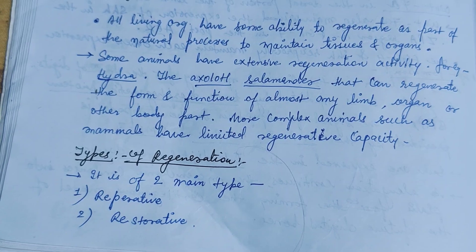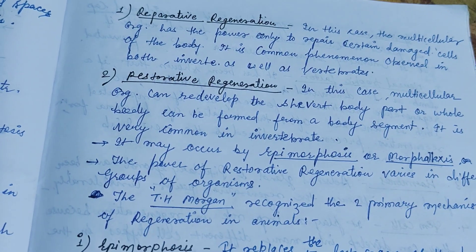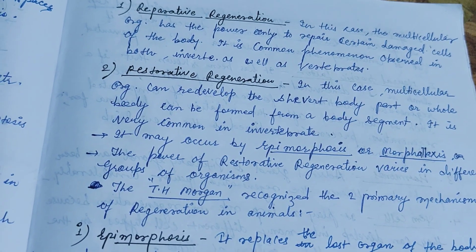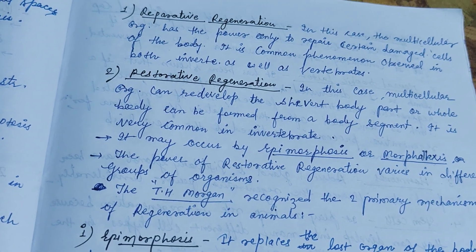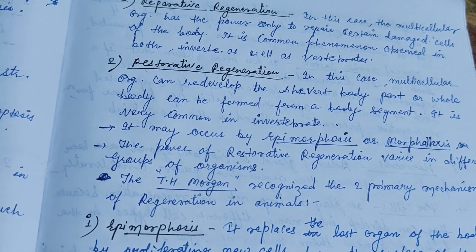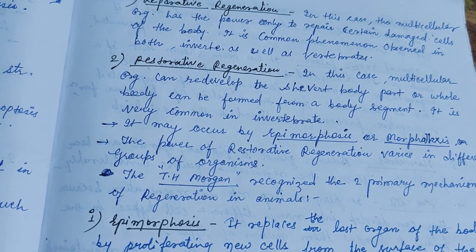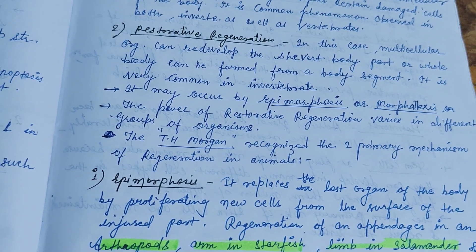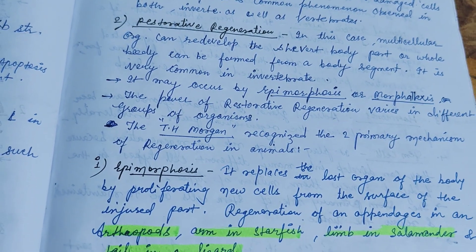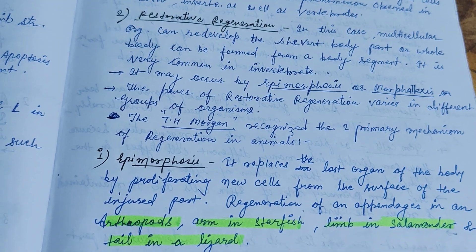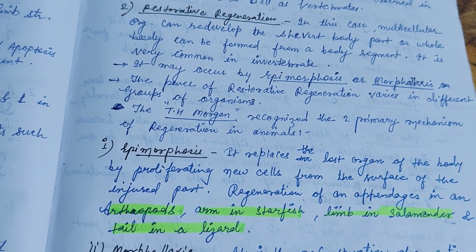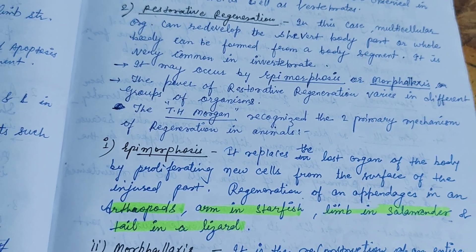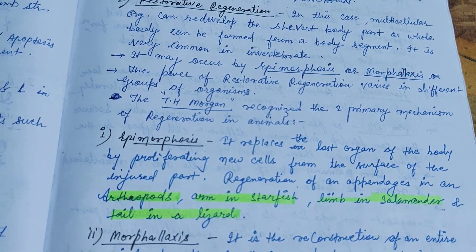Repetitive regeneration is when a multicellular organism has the power to only repair certain damaged cells of the body. It is a common phenomenon observed in both invertebrates as well as vertebrates. The second type is restorative regeneration, in which the multicellular organism can redevelop the severed body part.